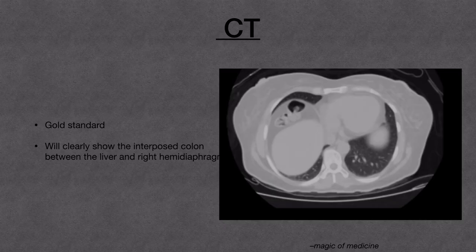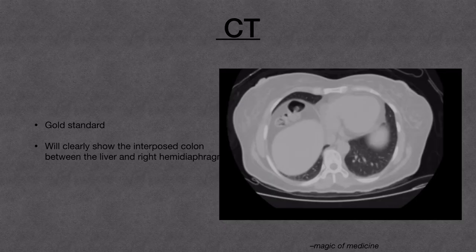Coming to CT: CT is the gold standard. In some cases where there is still confusion and haustrations are not seen properly, we can advise CT, which will clearly show the interposed colon between the liver and the right hemidiaphragm. Here you can see the interposed colon between the liver and right hemidiaphragm.